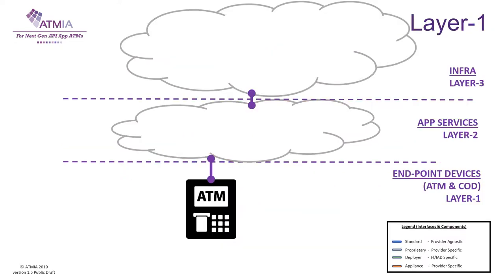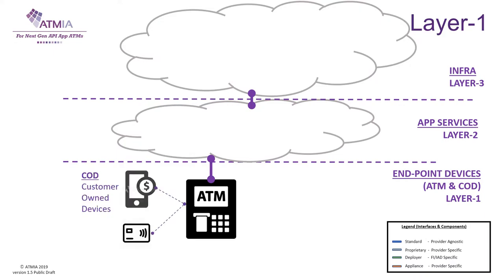The Endpoint Devices layer is designed to leverage on the current mobile app development technologies, for the same app customer experience on the ATM as on the mobile phone. The Next Gen Blueprint supports customer owned devices like the mobile phone, but contactless cards too.